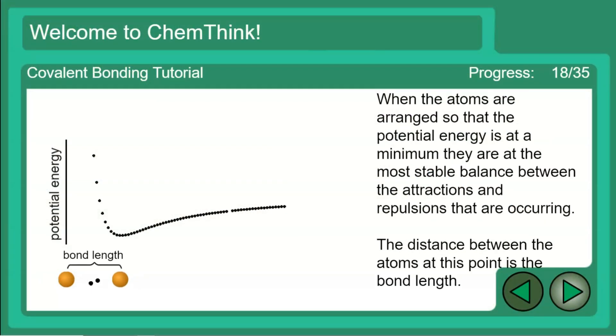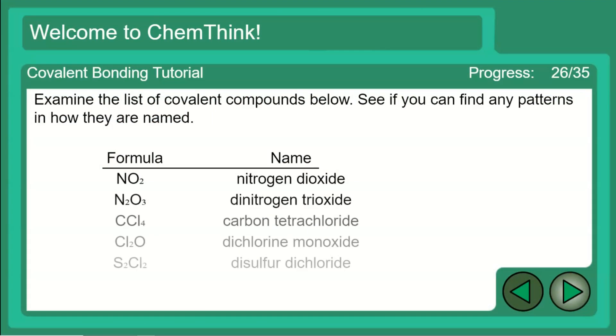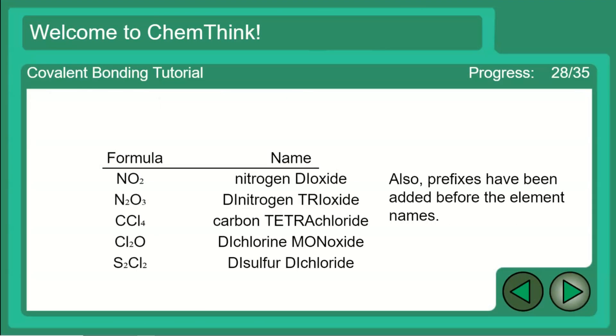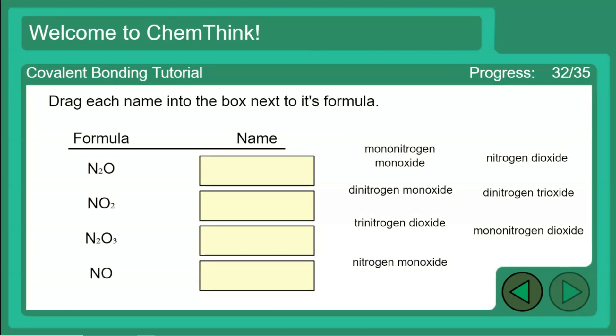The way I chose to start my unit on covalent bonding was much the same — I used another tutorial from SimBucket. What I really like about this one is it shows students how covalent bonds form, and it also covers bond length and bond strength, giving them a piece of the energetics involved in covalent bond formation. Probably one of the best things is it teaches the rules for covalent bonding nomenclature. It does a nice job differentiating between naming covalent compounds versus ionic compounds.